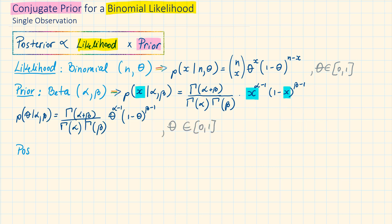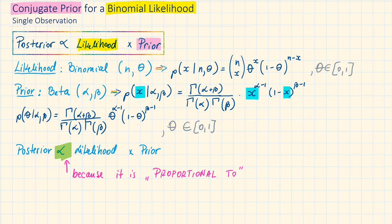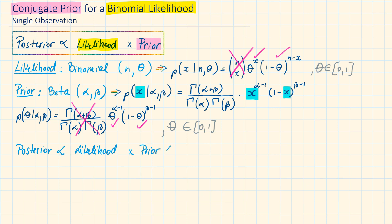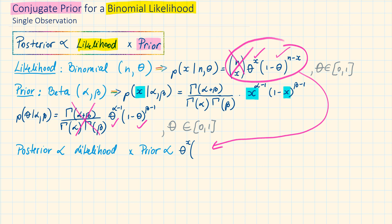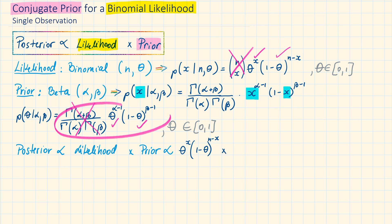Writing out the formula, the posterior is proportional to the likelihood times the prior. Because it is proportional to, we can simply ignore the constants, which makes our calculations much simpler. So we only keep the terms with theta in them. From the binomial likelihood, we take theta to the power of x times 1 minus theta to the power of n minus x. From the beta prior, we use theta to the power of alpha minus 1 times 1 minus theta to the power of beta minus 1.